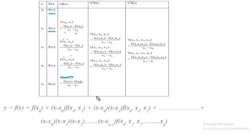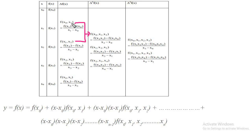When you have the first-order divided differences, you can get the next set by finding the difference between adjacent first-order values. We get the second-order divided difference f(x0, x1, x2), which is the difference between f(x1, x2) and f(x0, x1) divided by x2 minus x0. Similarly you get x1, x2, x3 from those two. If you want the third order, you consider the second-order pairs and continue. For a large set of data you go to higher orders.